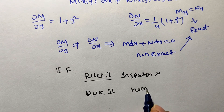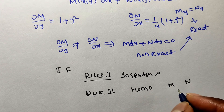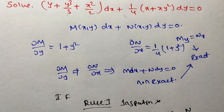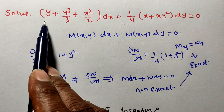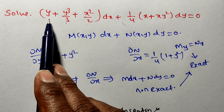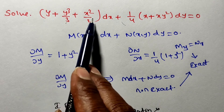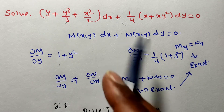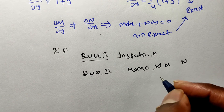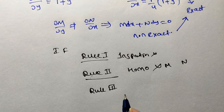The next method is the homogeneous differential equation. In this case, M and N must both be homogeneous of the same degree. Check M: y + y³/3 + x² has terms of degree 1, degree 3, and degree 2 — the degrees are not the same. So this is non-homogeneous. You cannot apply Rule 2; you cannot find the integrating factor from Rule 2.